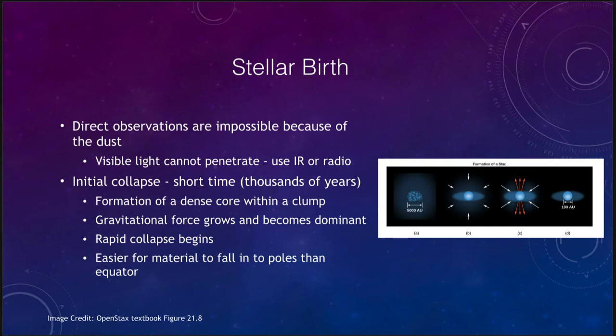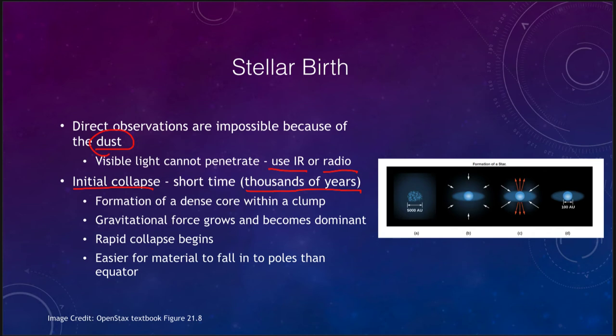What is the process of the birth of a star? Direct observations are not possible because of dust — visible light makes the star formation process invisible. However, infrared or radio waves can penetrate the dust and allow us to get a glimpse into what is happening inside these clouds. First, we have the initial collapse, which is relatively short, taking only thousands of years — astronomically speaking, an extremely short amount of time.